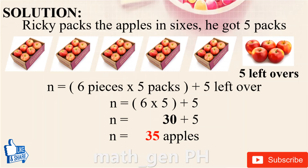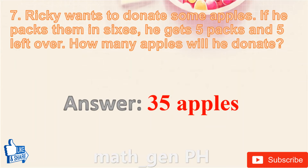Solution: Rikki packs the apples in sixes and got 5 packs with 5 left over. N = (6 pieces × 5 packs) + 5 left over = 6 × 5 + 5 = 30 + 5 = 35. N = 35 apples. Answer: 35 apples.